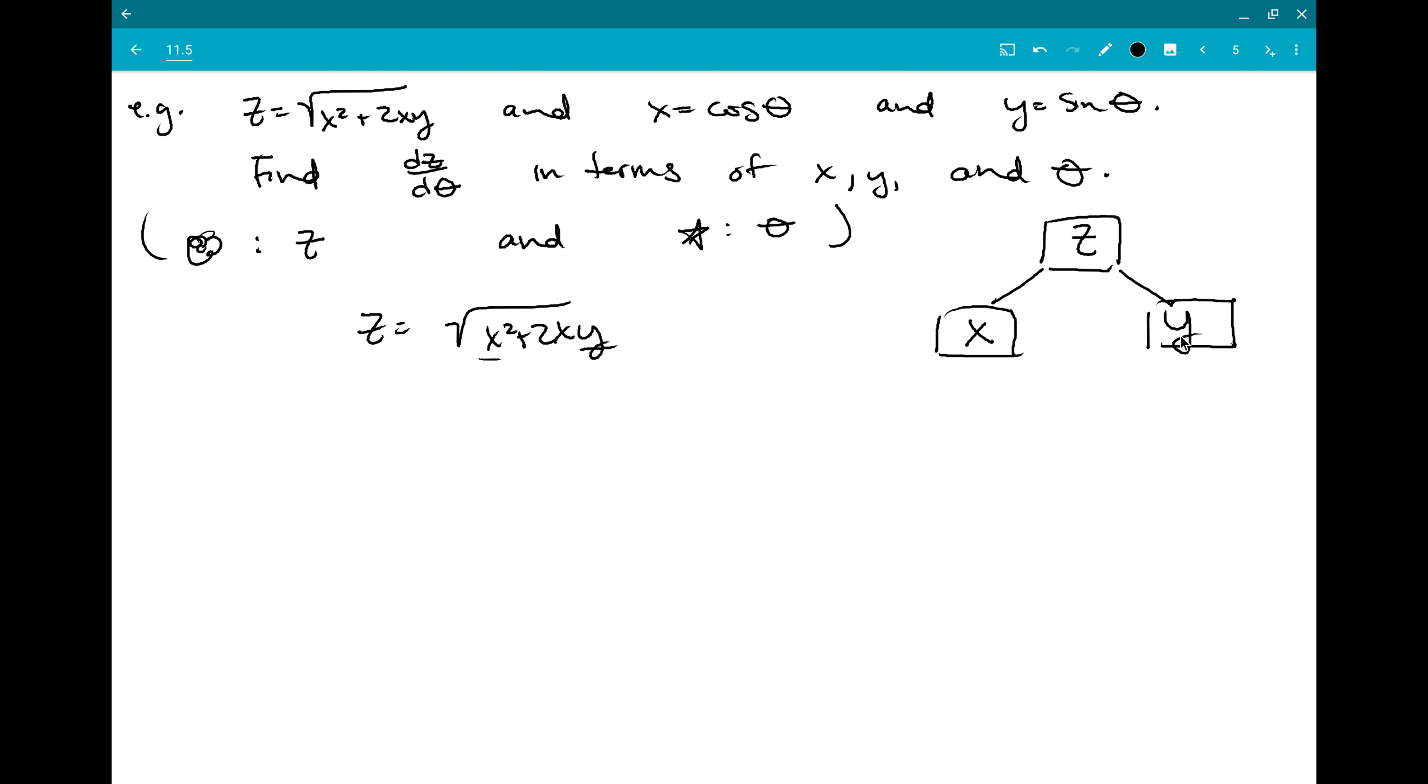And then draw a line to show that z up here depends on x and y down here. And since I know this is going to end in taking partial derivatives, I may as well just take those right now. So dz dx.